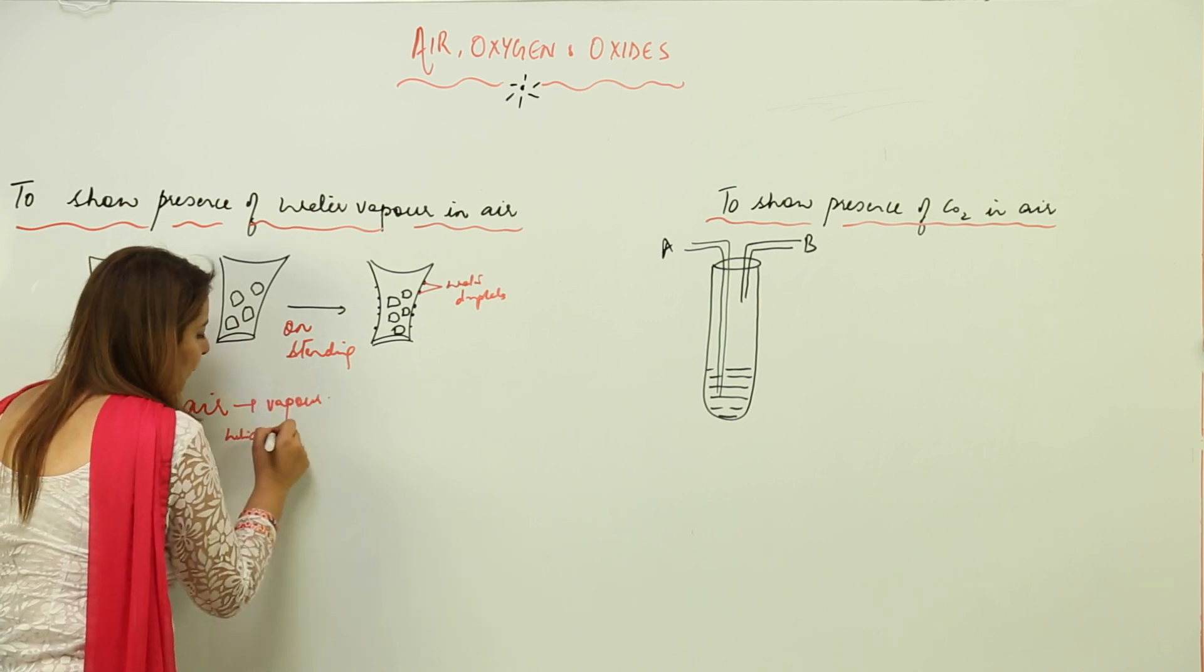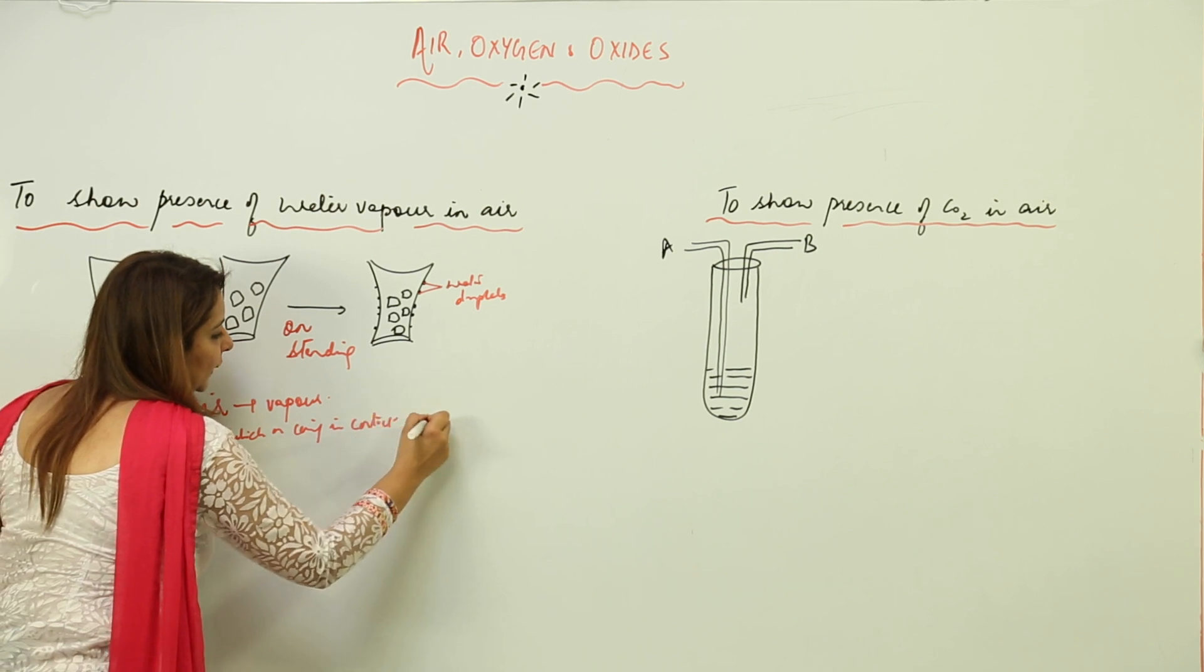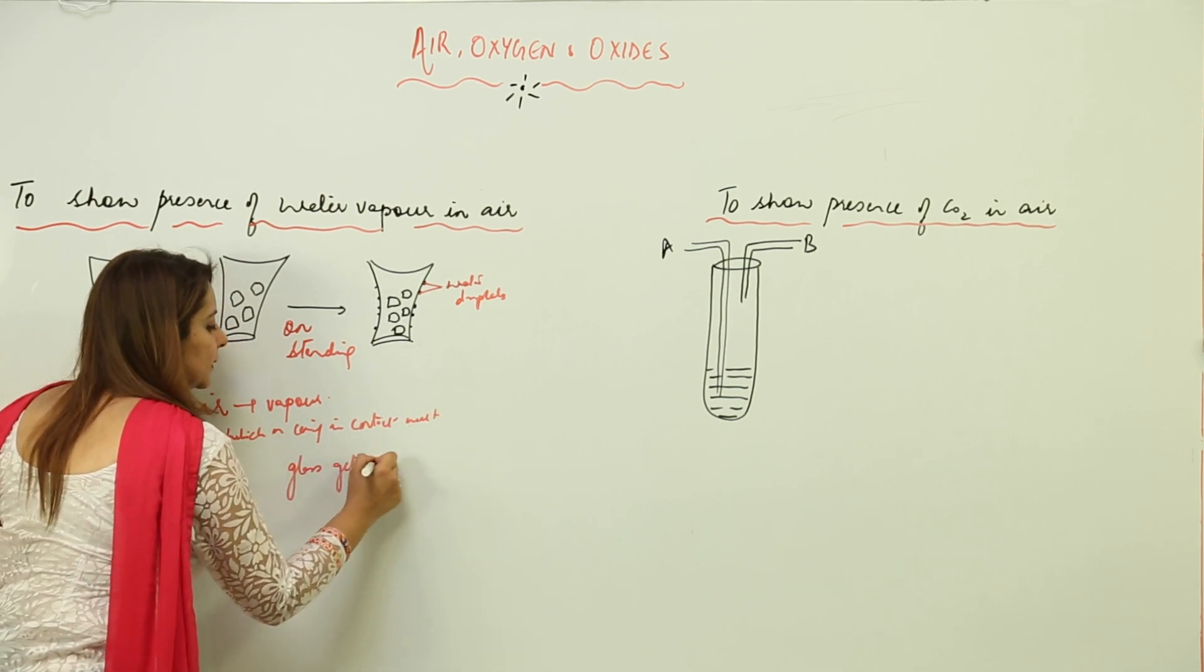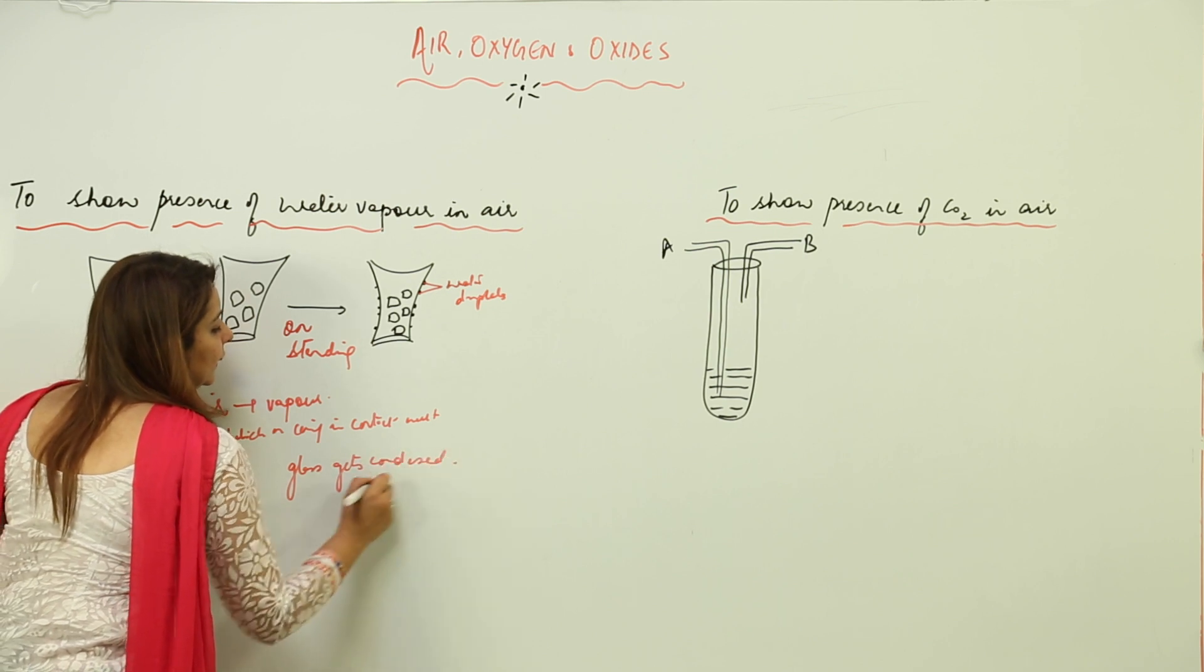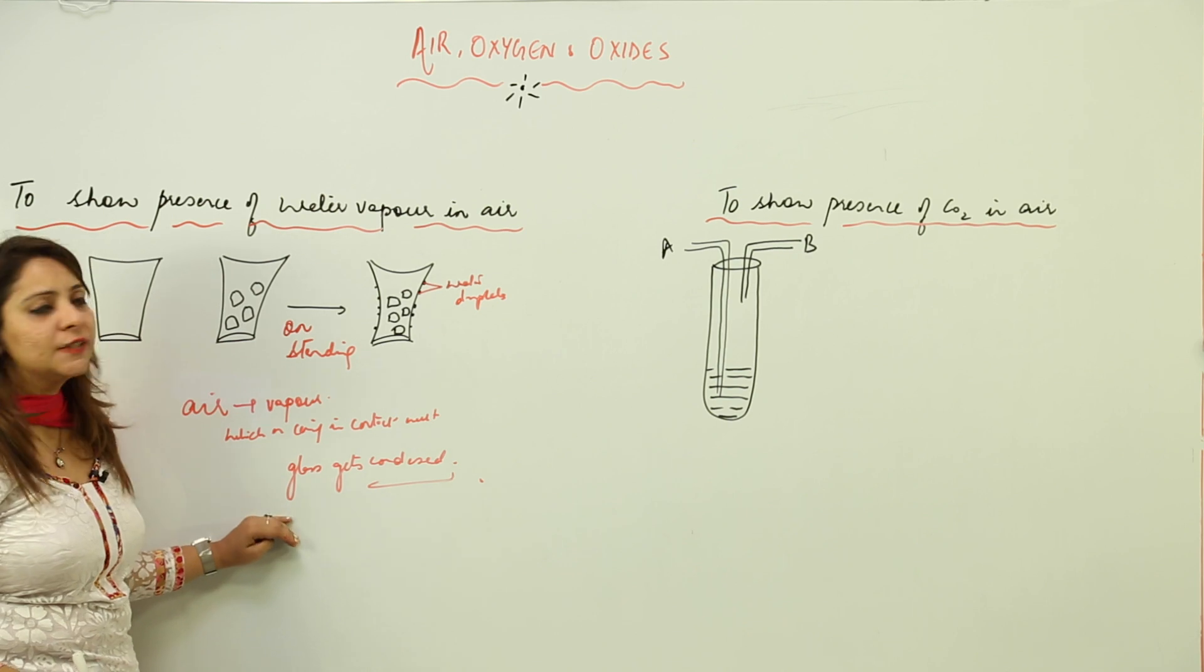The water vapor, on coming in contact with the cold glass, gets condensed. That is the reason you see water droplets outside the glass. This actually proves that water vapor is present in air.